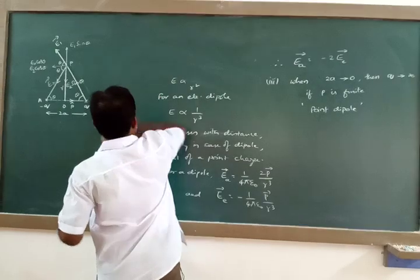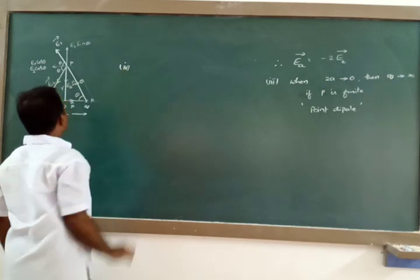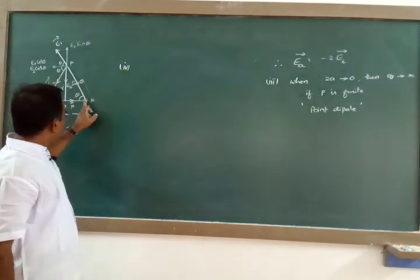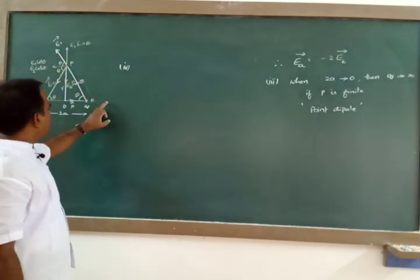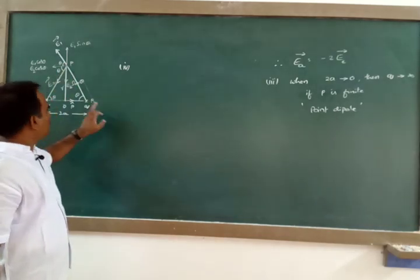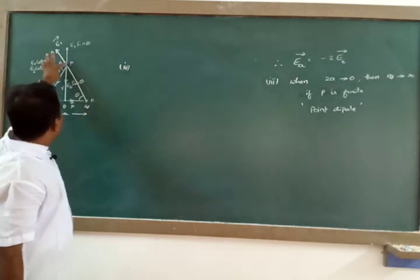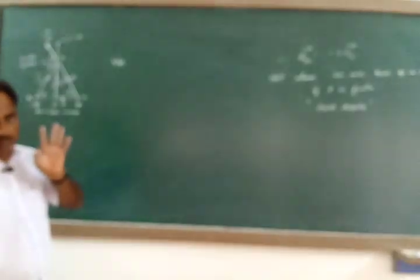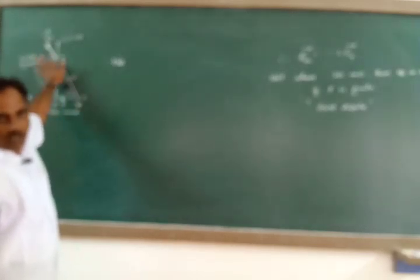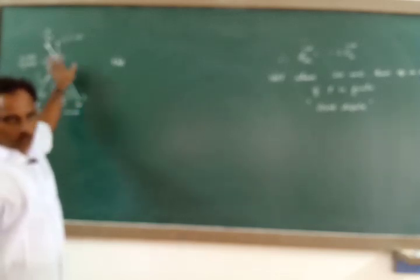The next point is about terminology. A point on the axis of the dipole is called the end-on position. A point on the equatorial line is called the broad side-on position. So you found the electric intensity at these two positions.